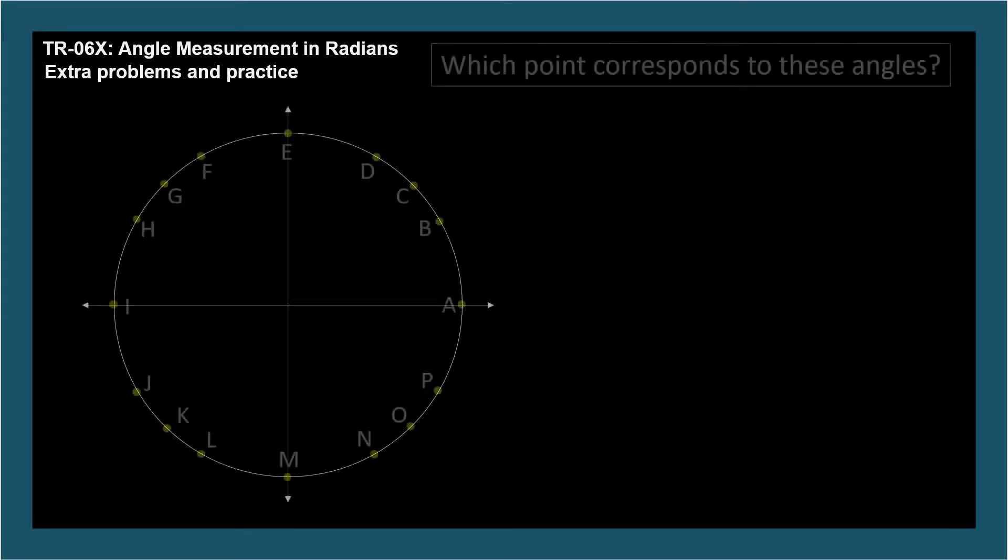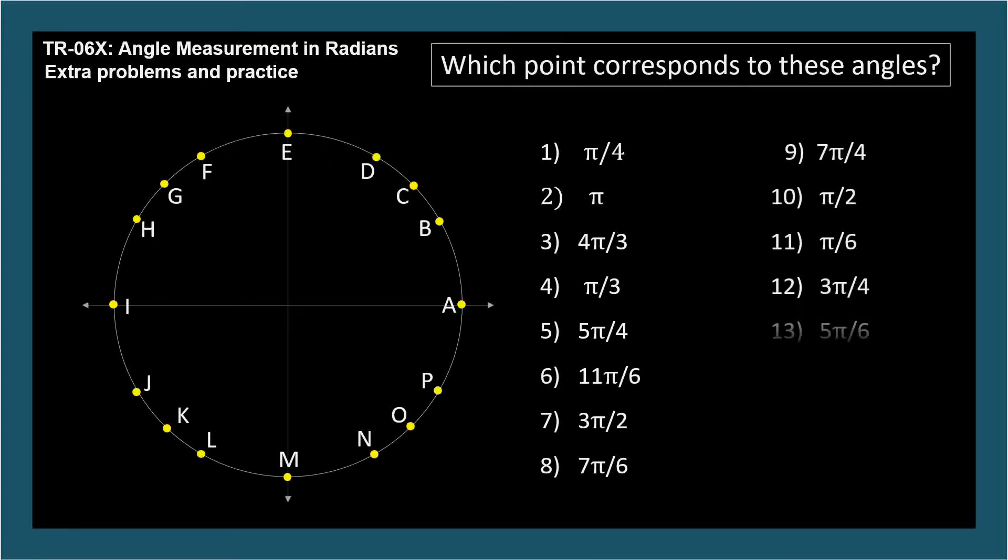So for each angle measurement in radians, identify the point on the circle that corresponds to the measure. As an example, for number 1, which point corresponds to an angle of π over 4 radians? Write down your 16 responses, and I'll reveal the answers after a short pause.